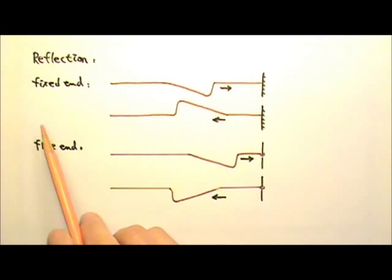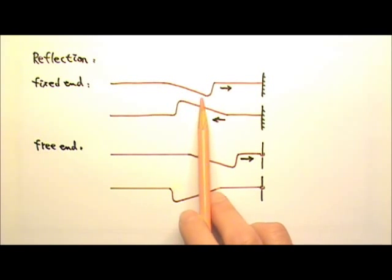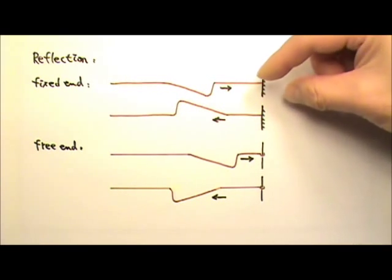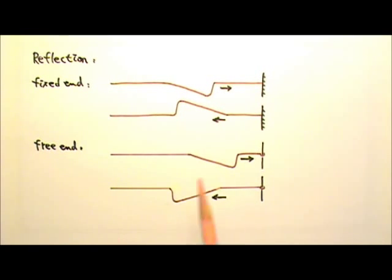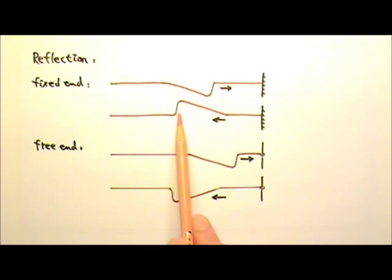When a wave reflects off a fixed end, the hump switches side because when the wave reaches the end of the rope, the downward hump pulls on the fixed support downward, so the support pulls back on the rope upward. Therefore, the reflected wave has an upward hump. Also, for this particular wave, the steeper edge is in the front, so it gets reflected first and it is still in the front after reflection.